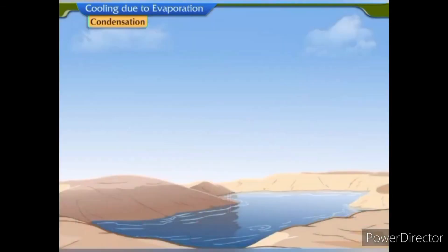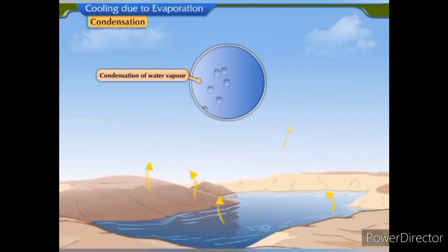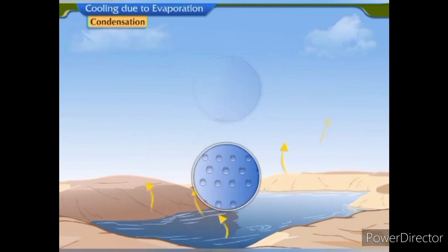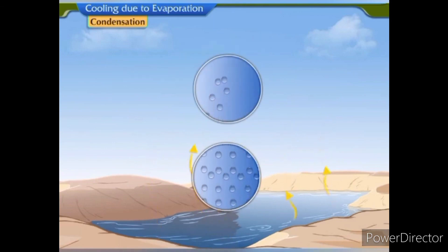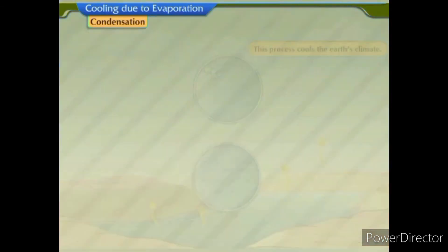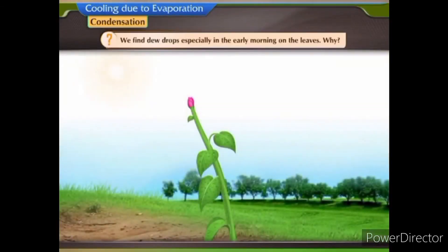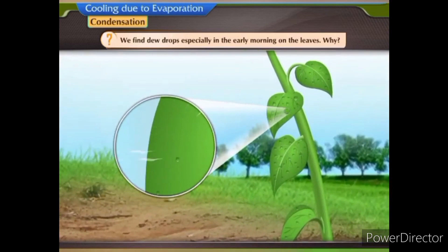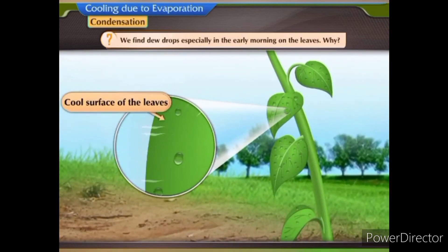We know that the formation of clouds is due to condensation of water vapour from the earth's surface. The heat removed from the surface through evaporation is released again in the atmosphere by the formation of clouds. This process cools the earth's climate. We find dew drops, especially in the early morning, on the leaves. This is because water vapour in the air, when it comes in contact with the cool surface of the leaves, condenses to form dew drops.